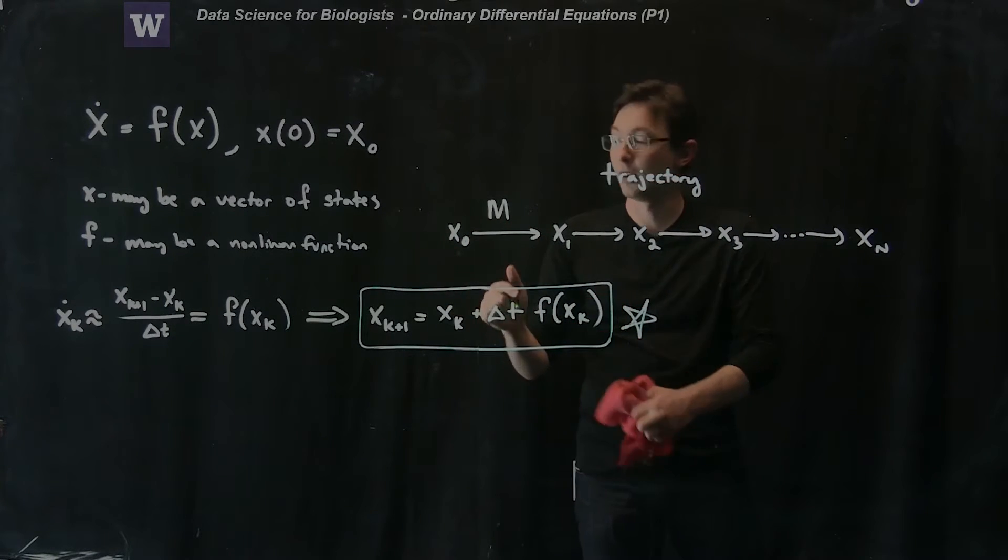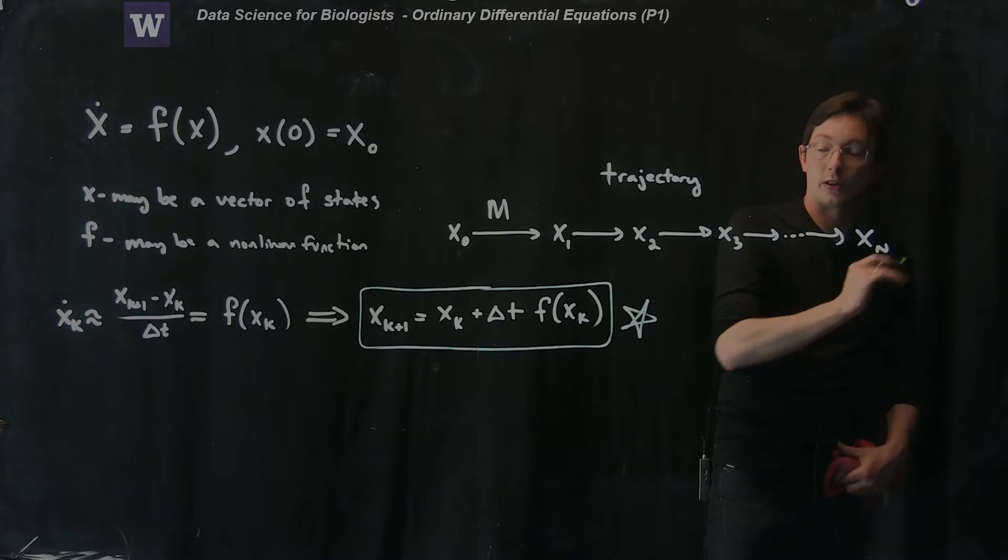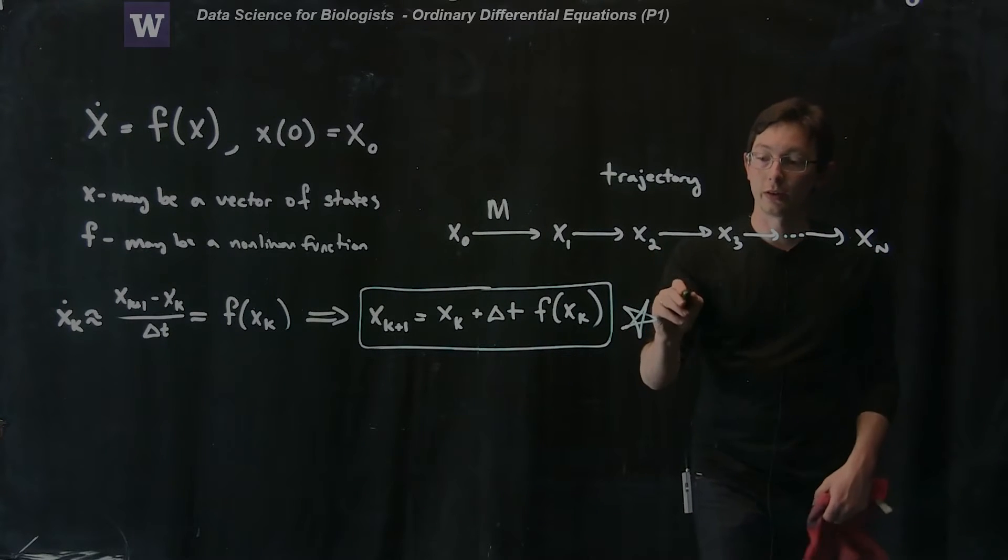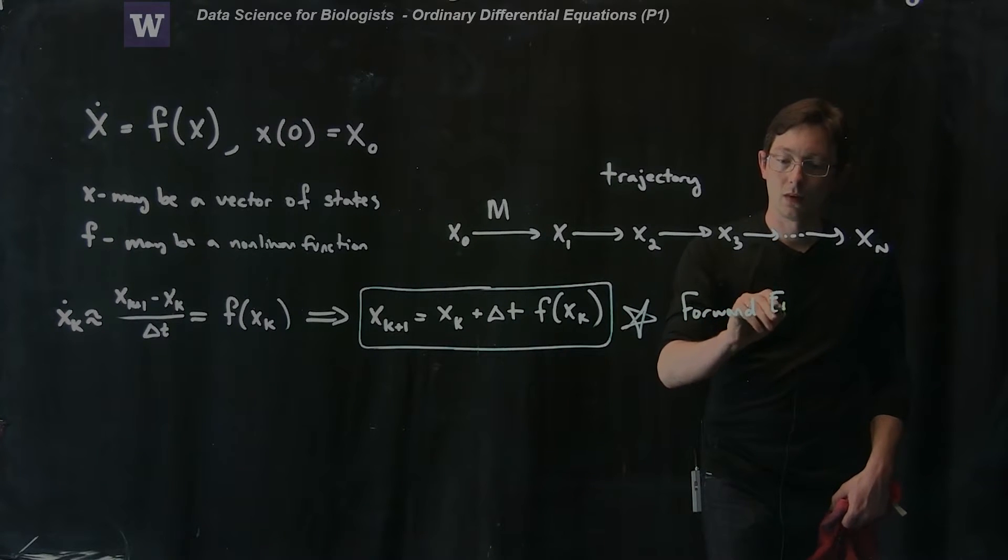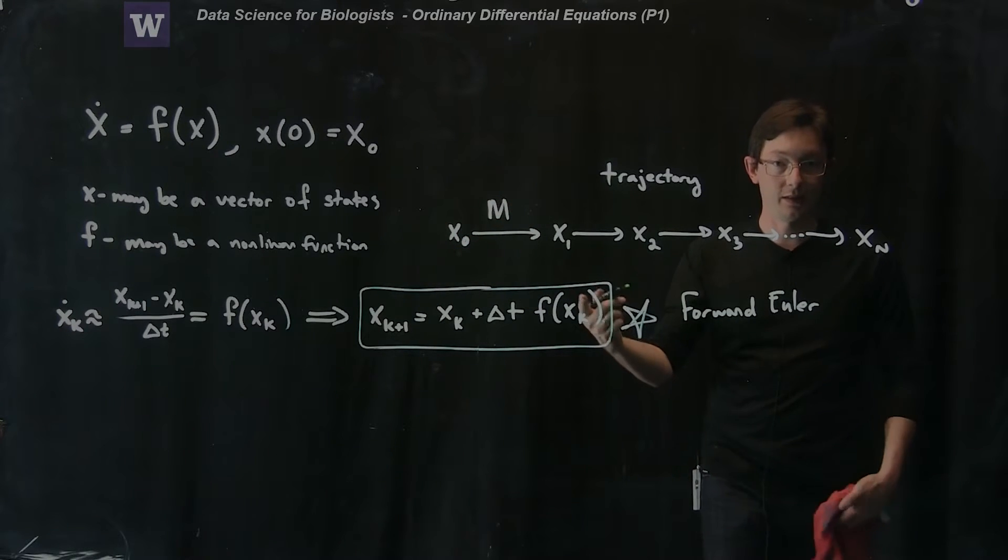So this is a great iteration and this will allow me to approximate the solution to my ordinary differential equation in time. This is called the forward Euler scheme. It's called forward Euler because we use the forward difference to get this.